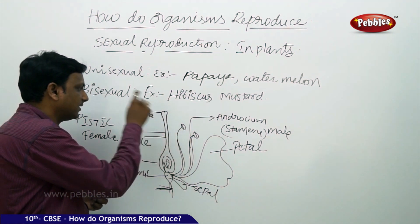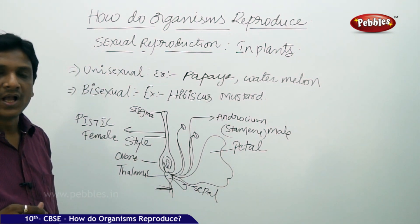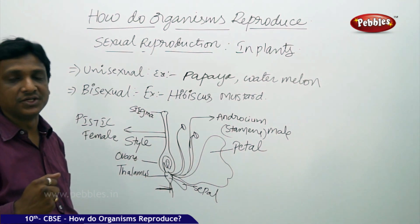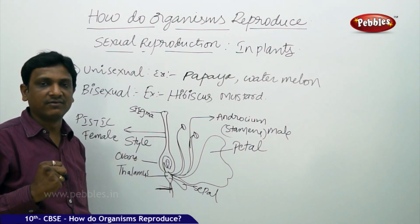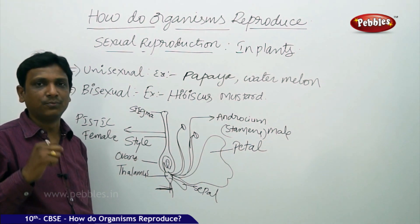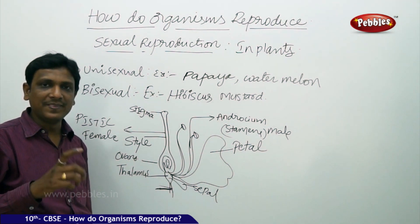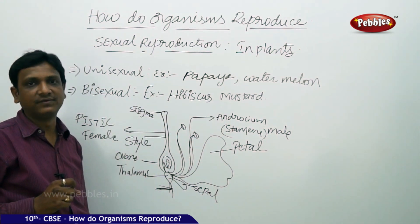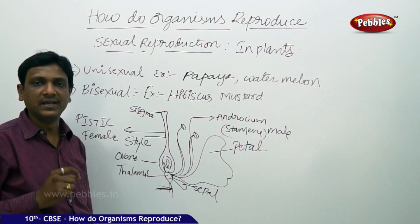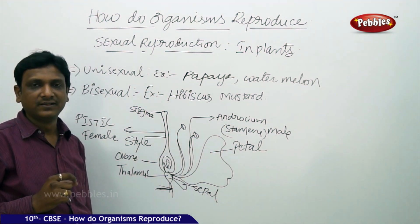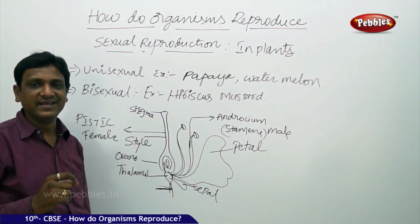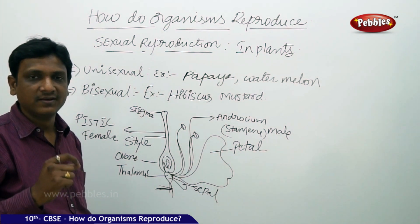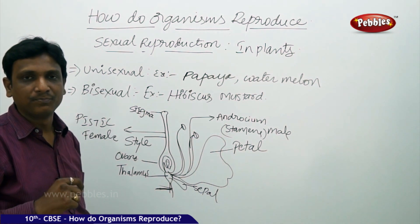The pollen has to travel from the anther to the stigma. This happens by various natural means. Insects help in pollination — many insects visit the flower for nectar, and during this process pollen sticks to their legs. When insects visit different flowers, the pollen is deposited on the stigmas of various flowers, enabling the transfer of male gametes. Not only insects, but wind, water, and other agents are also helpful. Pollination is the transfer of pollen from the anther to the stigma of a flower.